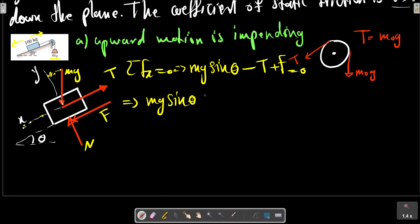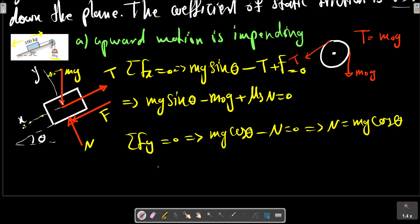Sigma Fy: mg cos theta minus N equals zero. So we can write the expression for m0*g equals mg sin theta plus mu_s*N, which is mg cos theta. With simplification we have: